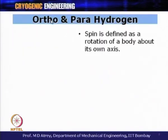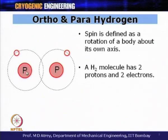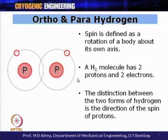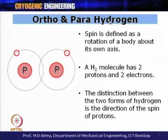What are ortho and para hydrogen? Before discussing them, we need to understand the concept of spin, which is defined as the rotation of a body about its own axis — just as the Earth spins or a top spins. A hydrogen molecule has two protons and two electrons; these protons are always spinning. The distinction between ortho and para hydrogen is based on the direction of the spin of these two protons.